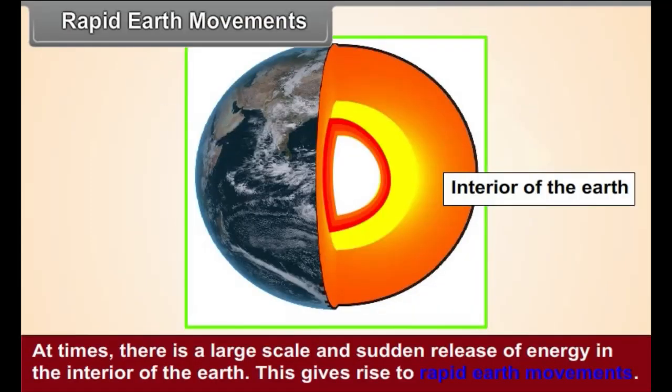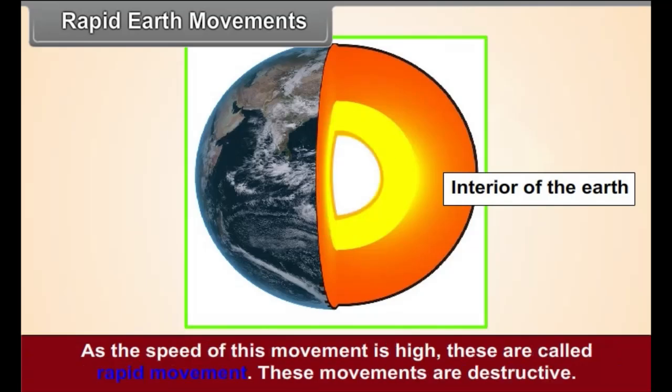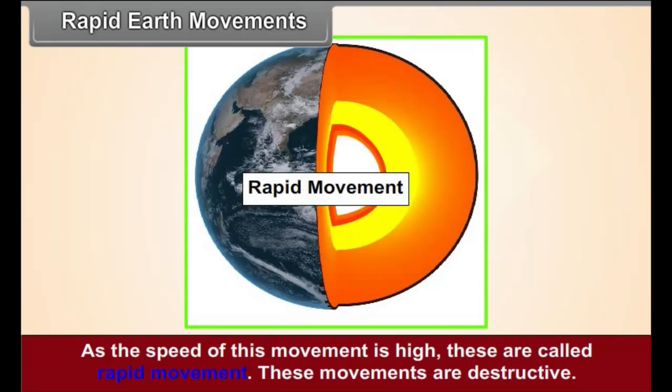Rapid Earth Movements. At times, there is a large scale and sudden release of energy in the interior of the earth. This gives rise to rapid earth movements. As the speed of these movements is high, these are called rapid movements.